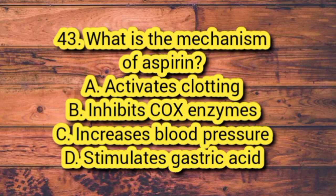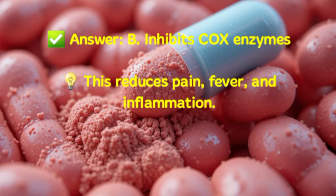Question 43. What is the mechanism of aspirin? A. Activates clotting. B. Inhibits COX enzymes. C. Increases blood pressure. D. Stimulates gastric acid. Answer: B. Inhibits COX enzymes. This reduces pain, fever, and inflammation.